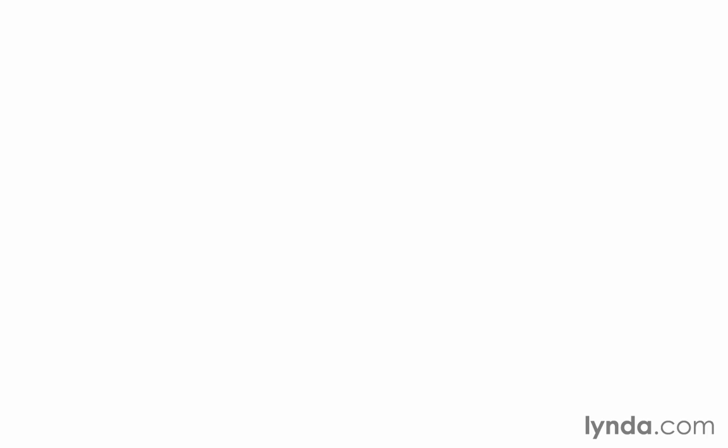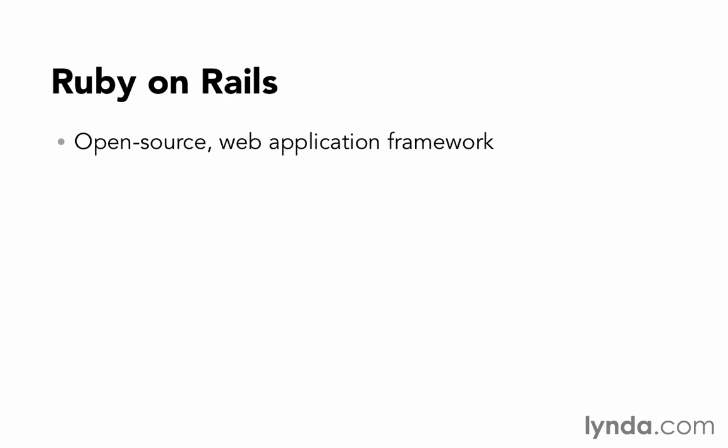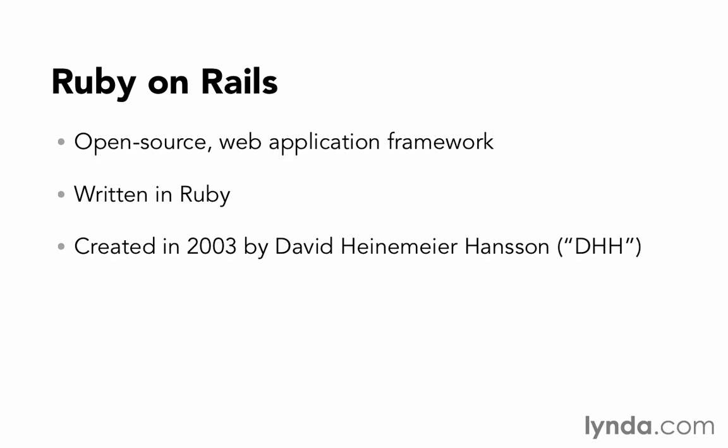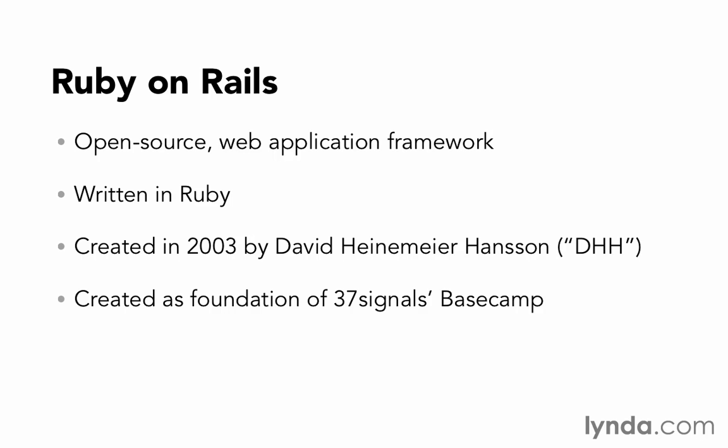Now if Ruby is the first half, then Rails, or Ruby on Rails, is the second half. So what is Rails? It's an open-source web application framework that's written in the Ruby language. It was created in 2003 by David Heinemeier Hansen, who the community often refers to as simply DHH for short. Rails was created as the foundation of 37signal's Basecamp application, then released as open-source software for anyone to use in 2004. Ruby had been in existence for 10 years before DHH came along and decided that Ruby would be a great programming language for writing a web application framework.